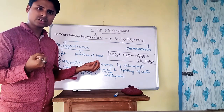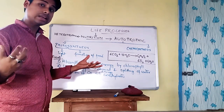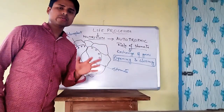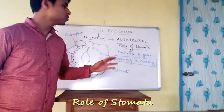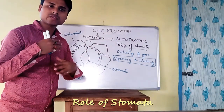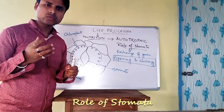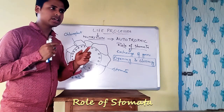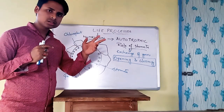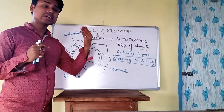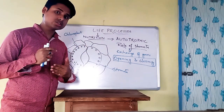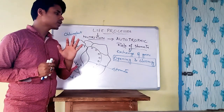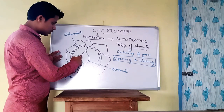We have seen that chlorophyll pigment traps the light energy. Now let's see the role of stomata. The stomata, present in the epidermal layer, perform the exchange of gases — either releasing or taking in carbon dioxide, or releasing or taking in oxygen. The stomata also conduct the transpiration process, which we will see later.